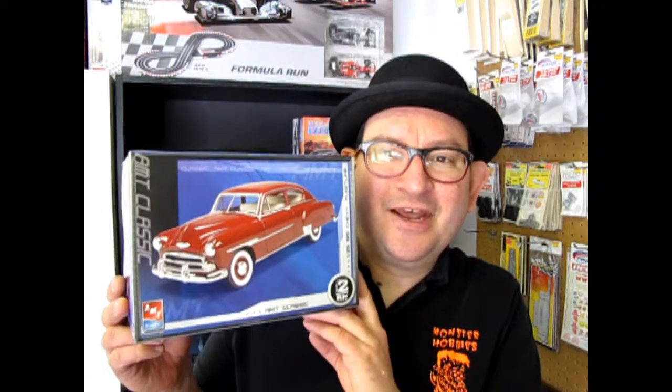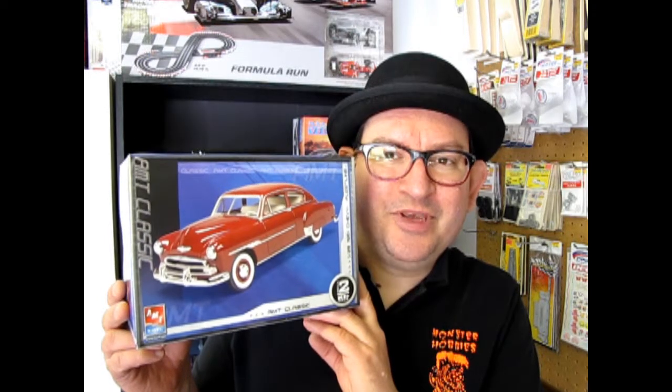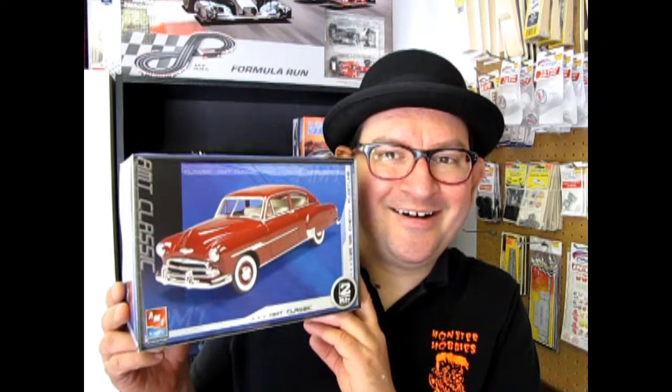And today we have a 1951 Chevy Torpedo Back Fleetline Car. Yeah, it was called the Torpedo Back because of the way the roof went to a point, as we will see in this video. So now let's go down to the bench and open the lid on this amazing model.